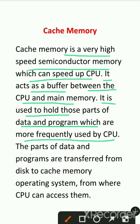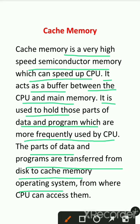The parts of the data and programs are transferred from disk to cache memory by the operating system. Then the CPU can access the data from cache memory.